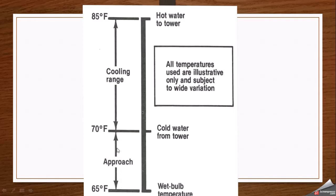However, if the wet bulb temperature drops to 55°F instead of 65°F while the cold water temperature remains at 70°F, the approach delta becomes 15°F instead of 5°F — a larger value — meaning the efficiency of the cooling tower decreases. These terms explained in this video are very useful and help to understand the concept of the cooling tower and how temperature differences play an important role in its operation.